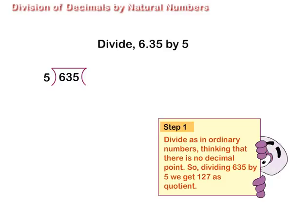Step 1. Divide as in ordinary numbers, thinking that there is no decimal point. So, dividing 635 by 5, we get 127 as quotient.